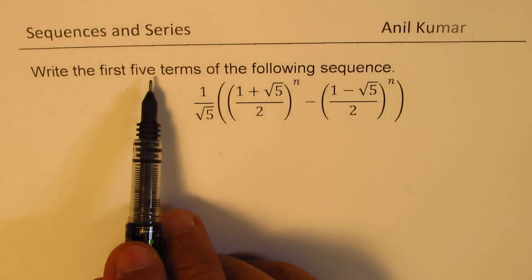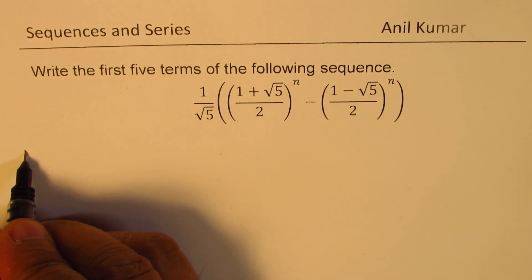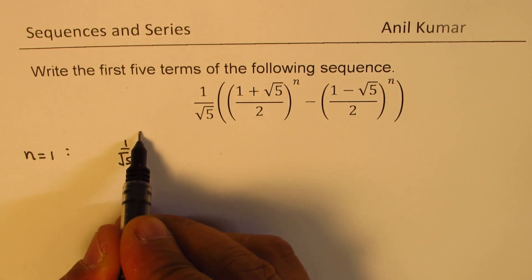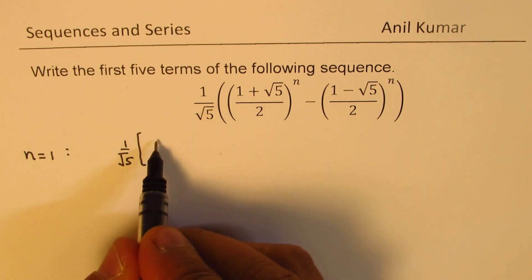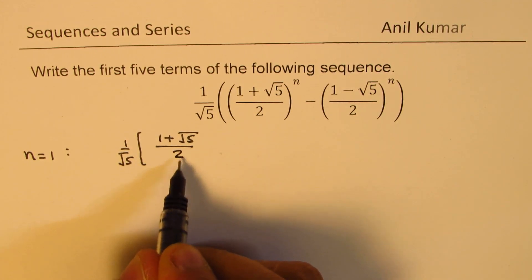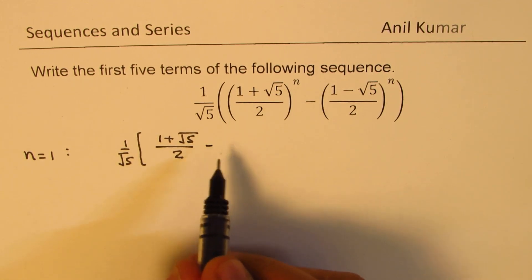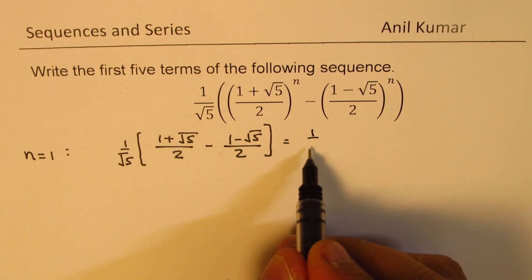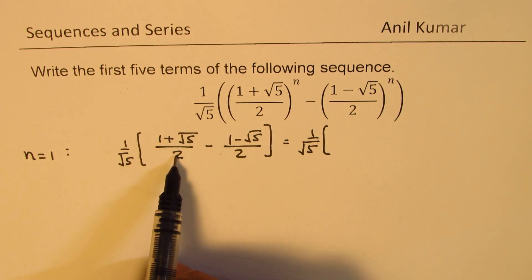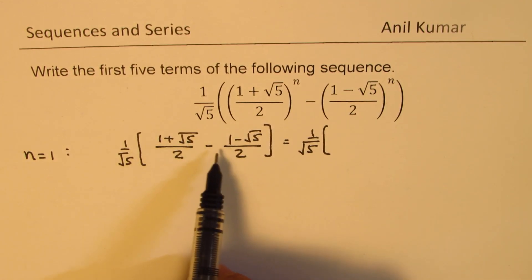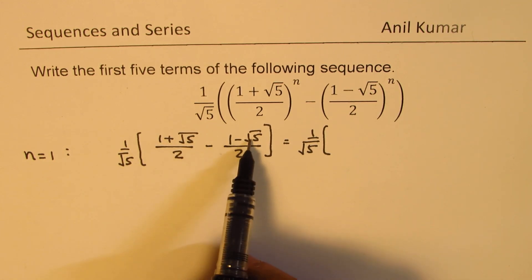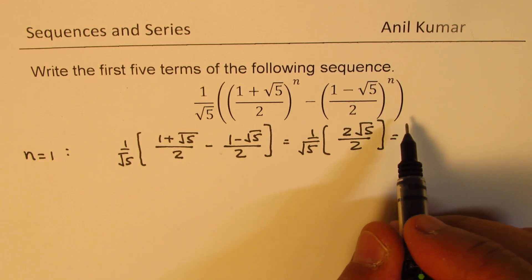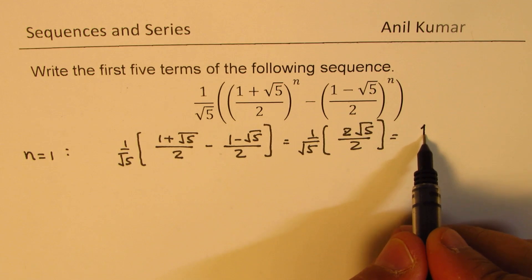When we say write the first five terms, we substitute n equals 1 and calculate the value. So for n equals 1, we have 1 over square root of 5, times the bracket: (1 plus square root of 5) over 2, to the power 1, minus (1 minus square root of 5) over 2. They have a common denominator of 2, so we get 1 plus square root 5 minus 1 plus square root 5, which gives 2 times square root of 5 over 2, and that gives square root of 5. The square roots of 5 cancel, and the 2s cancel.